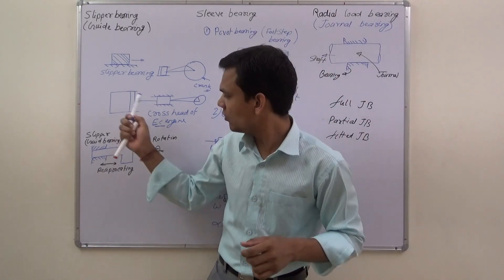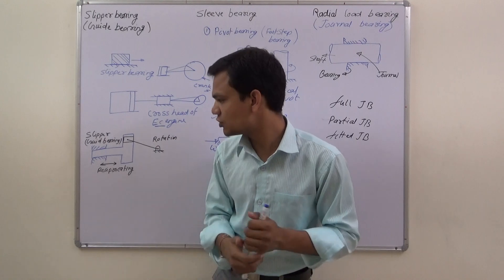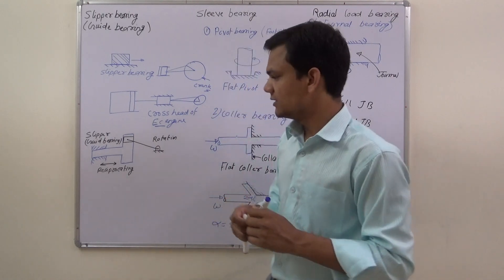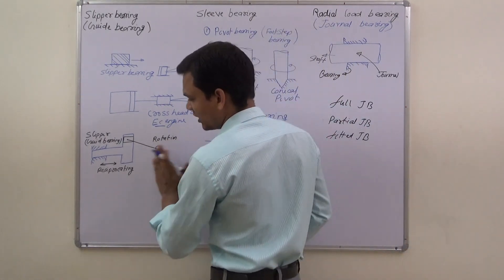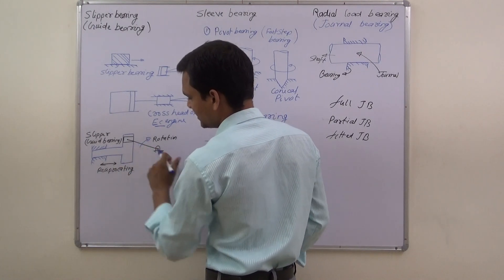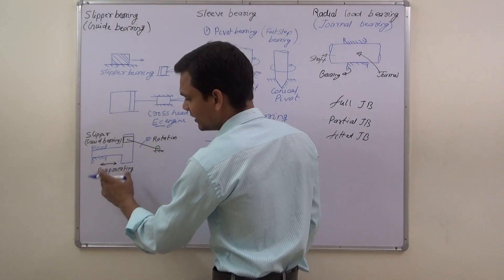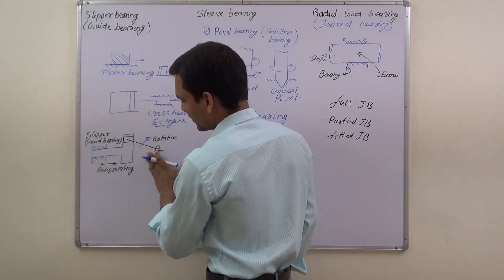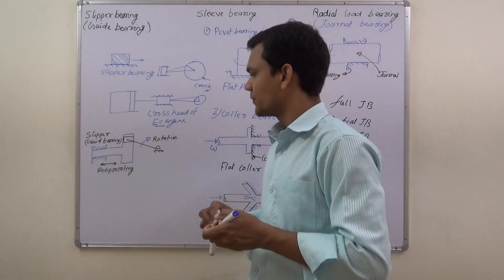Slipper bearing is also used in a Scotch-yoke mechanism. This is a mechanism that converts rotary motion into reciprocating motion. Here you can see this crank converting rotary motion into reciprocating motion.